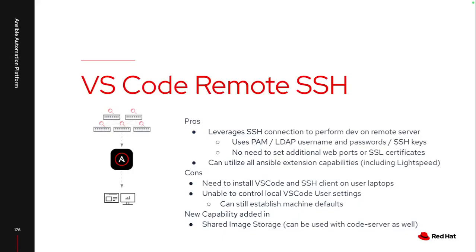So how is this different than the code server development environments I've done in the past? With code server it actually creates a web application version of VS Code that different users can log into across different ports depending on how it's set up. I can assign passwords to each user, but it wasn't tied to anything other than the passwords that were generated at runtime. I wanted to look into a different way that could leverage A) not needing multiple ports and B) leveraging already approved authentication methods - and that's where I came up with using the VS Code Remote SSH extension.